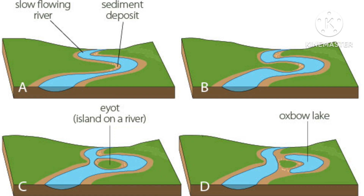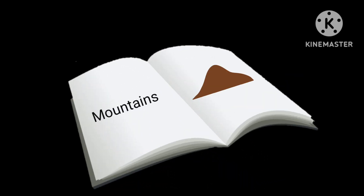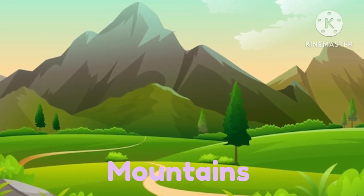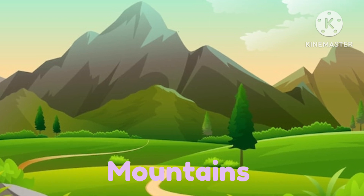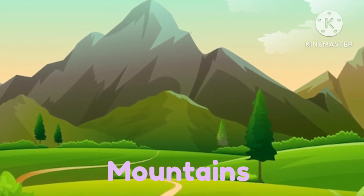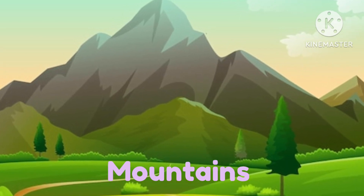The Indo-Gangetic Plains are the best example and are the most densely populated region. The third landform is mountains. A mountain is a natural raised area of the earth's surface. Mountains are largely narrow at the top and broad at the base, and with an increase in altitude there is a decrease in temperature.